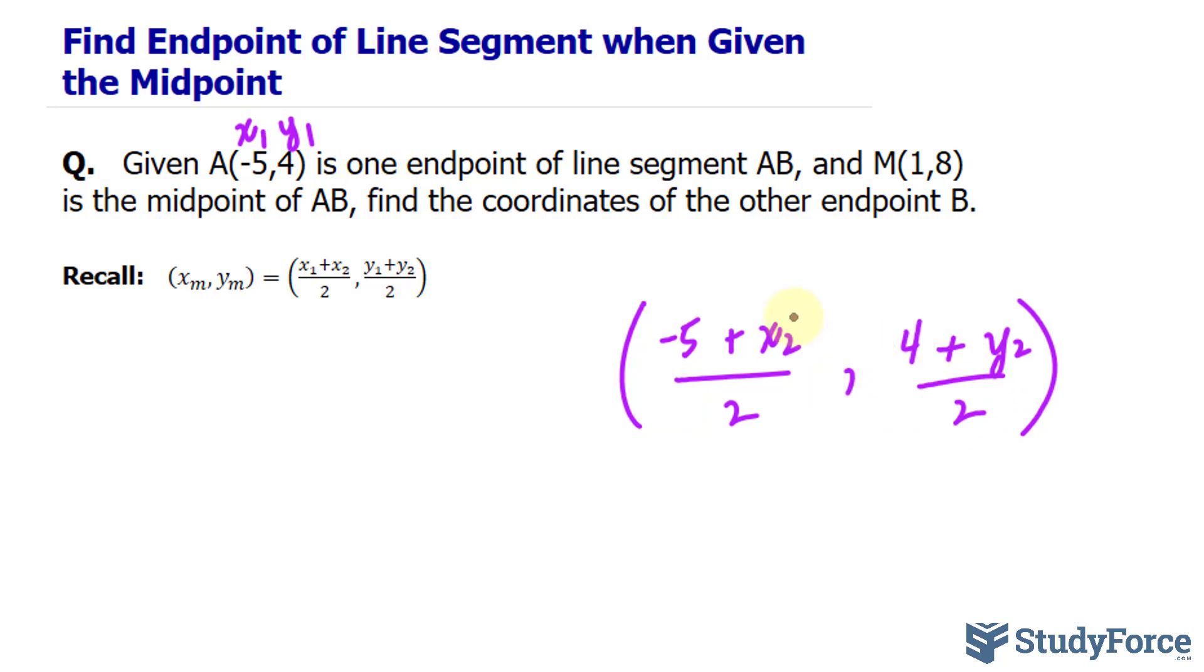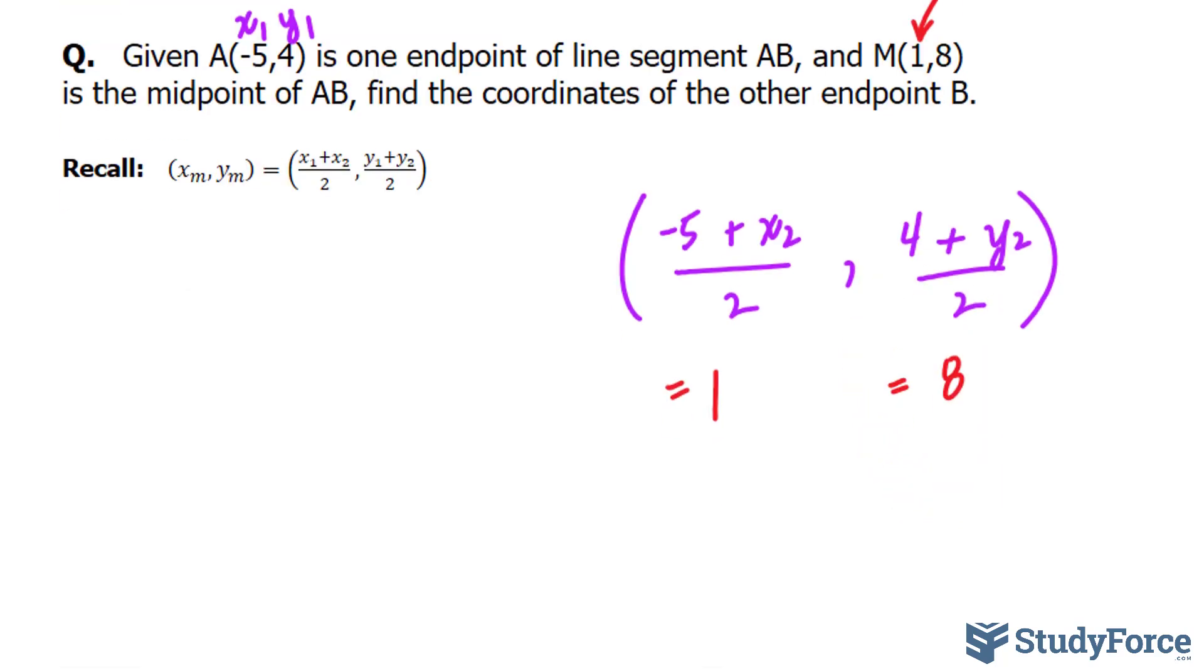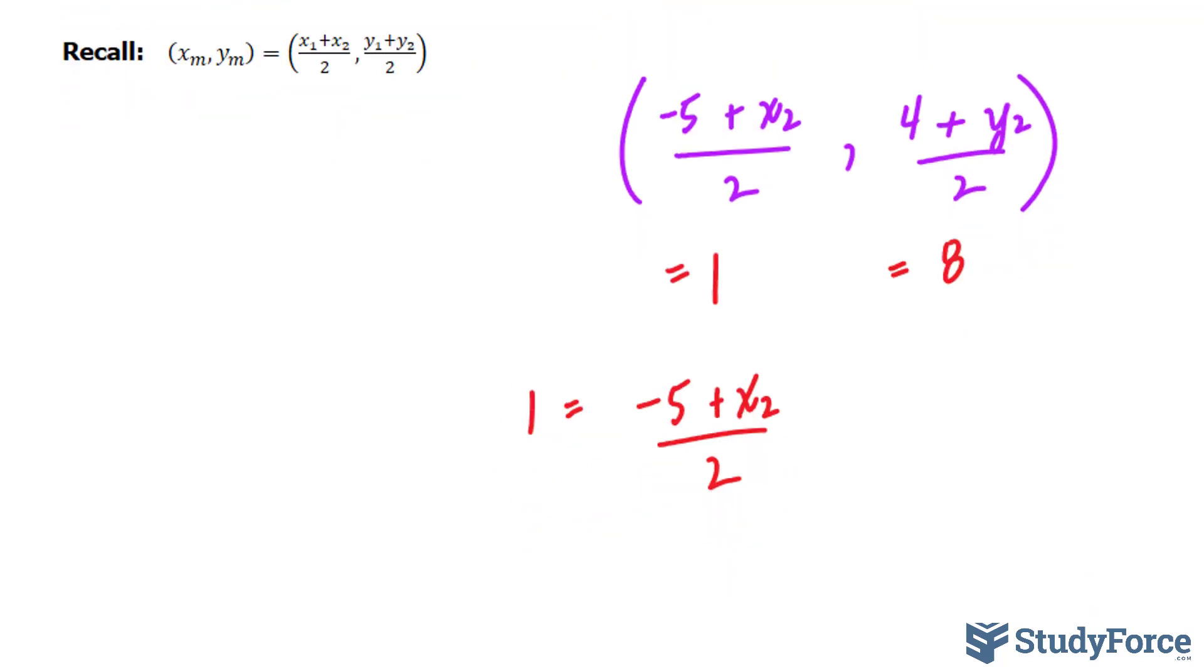If we took the average of the x values, had we known what x sub 2 was, it would equal to 1, and that corresponds to the x coordinate of the midpoint. The same can be said for this, that would equal to 8. So let's take this individually. I'll rewrite this as 1 is equal to negative 5 plus x sub 2 over 2, and I'll rewrite this as 8 is equal to 4 plus y sub 2 over 2.